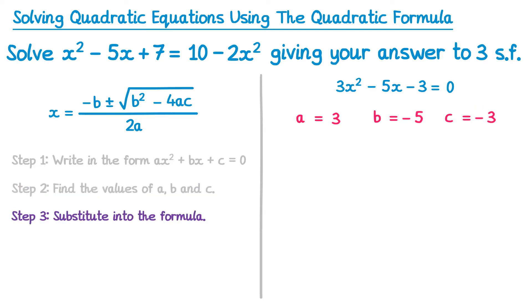Step 3, substitute into the formula. So we're going to write the formula out again, but instead of a, we'll write 3. Instead of b, negative 5. Instead of c, negative 3. The formula begins with x equals negative b, but b is already a negative, it's negative 5. So if we want negative b, this actually switches back to a positive. So x equals 5. Plus or minus the square root of b squared.